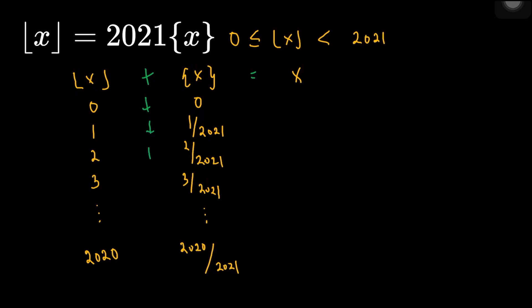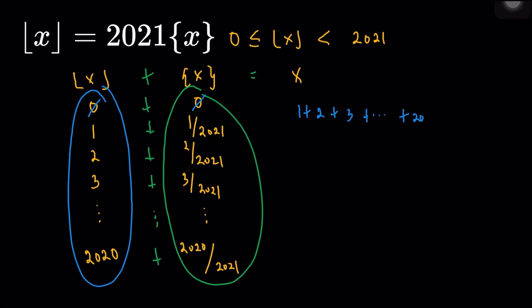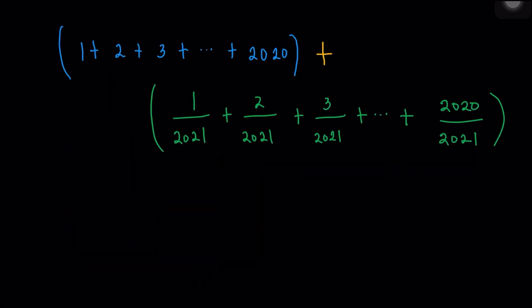I would add these pairs to get all the possible values of x. The question asks us to sum up the possible values of x, so I can do this more efficiently. If I want the sum of all possible values of x, I'll just add everything in the floor(x) column and add everything in the fractional part of x column. I'll ignore the zeros, so the blue sum is just the sum of the first 2020 positive integers, and then I'll add the green sum from the fractional part column.